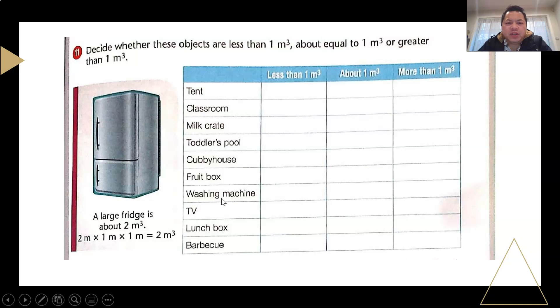First thing first, we need to know how big is one meter cube. Just for information's sake, one meter cube is basically one meter by one meter, so that is the space, not a very big space. The refrigerator that you have at home is like what is stated in the example here, it's about two meter cube.